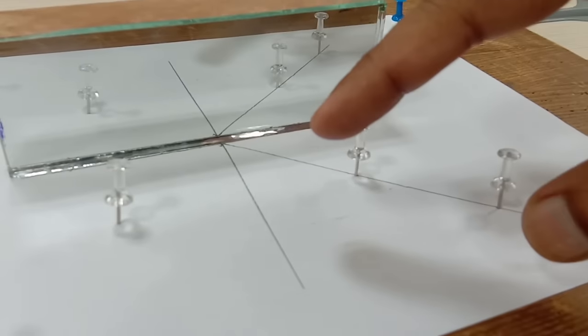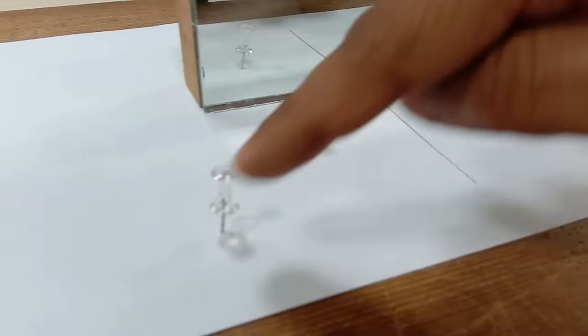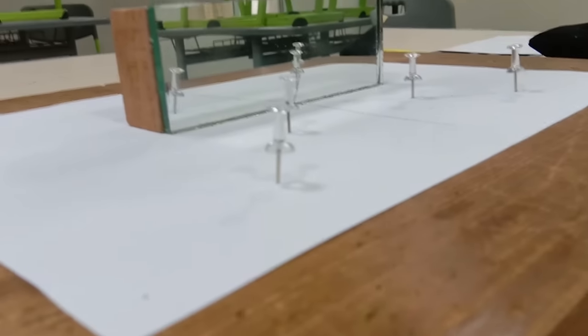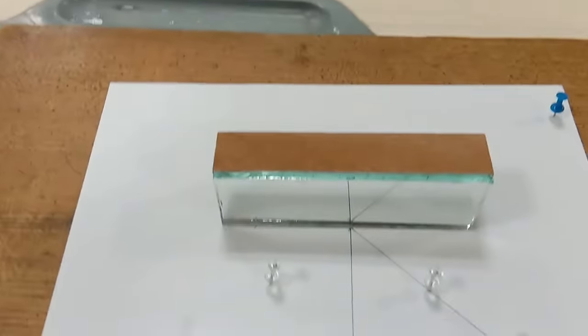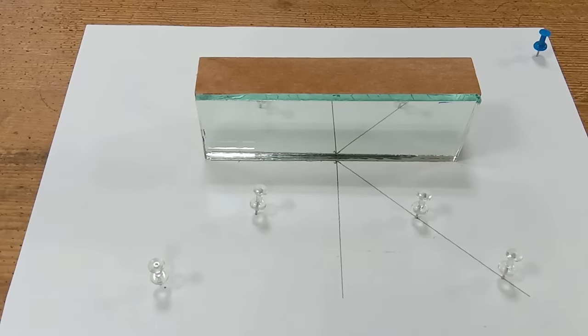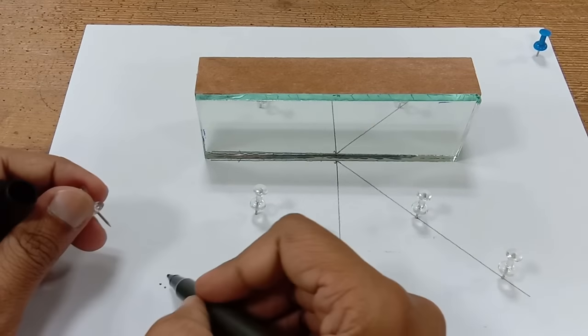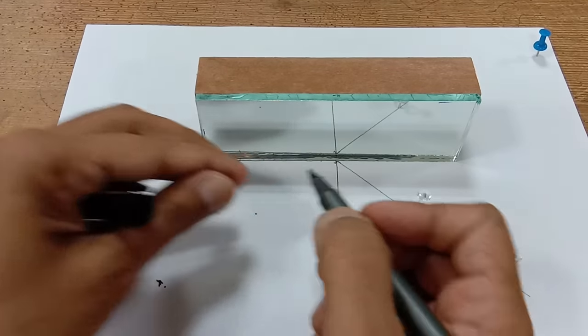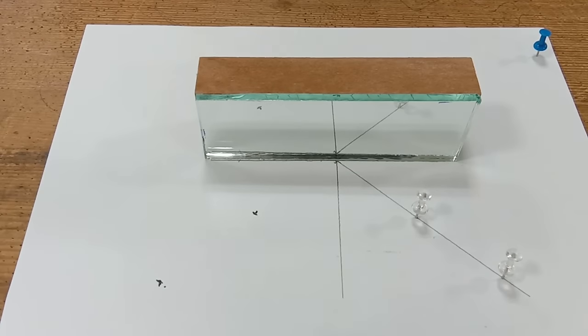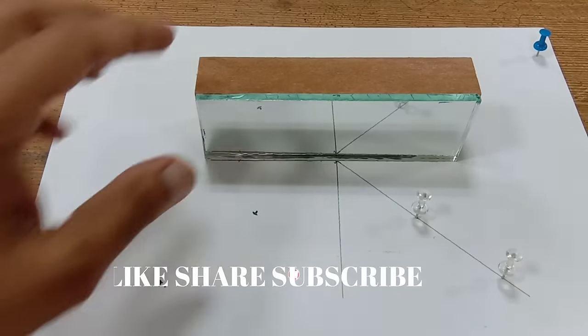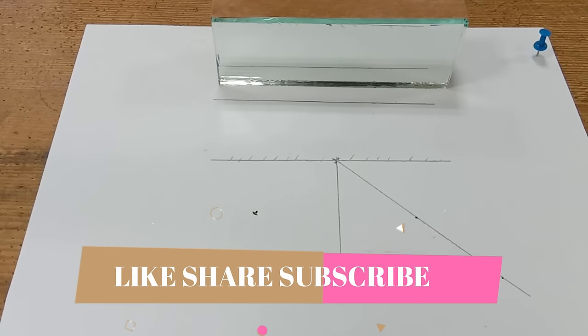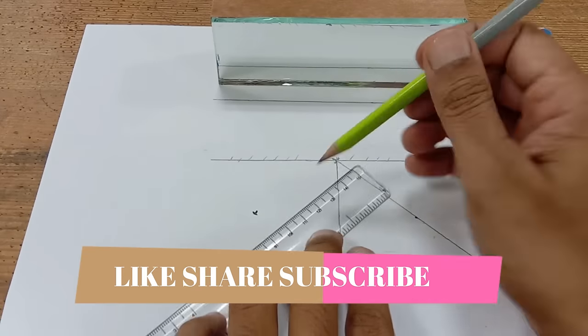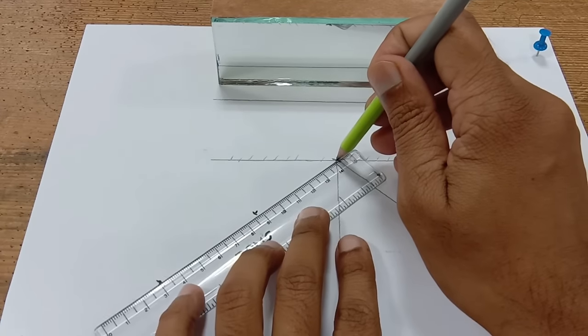These two pins, their images you can see there, and these two pins I have attached such that all four appear in straight line. Now I don't need these two pins, so I am going to mark their positions like this. I am going to remove these two pins and the mirror I am going to slightly push back. Now I am going to join these two points with this point, that is the point of incidence.